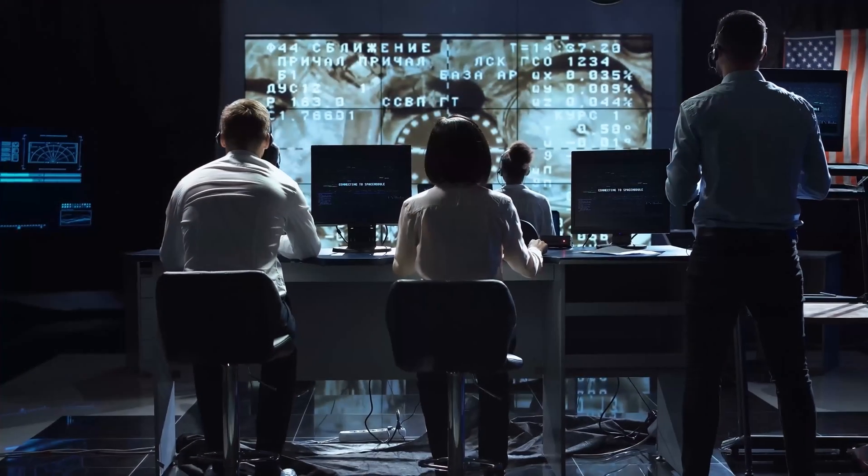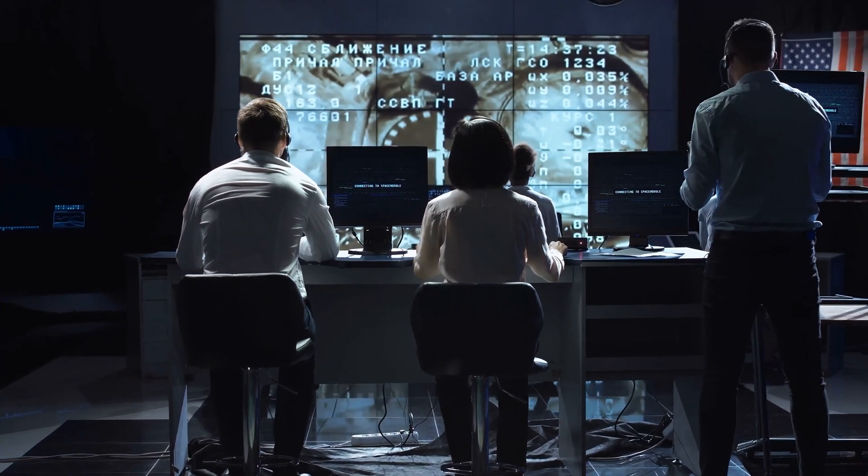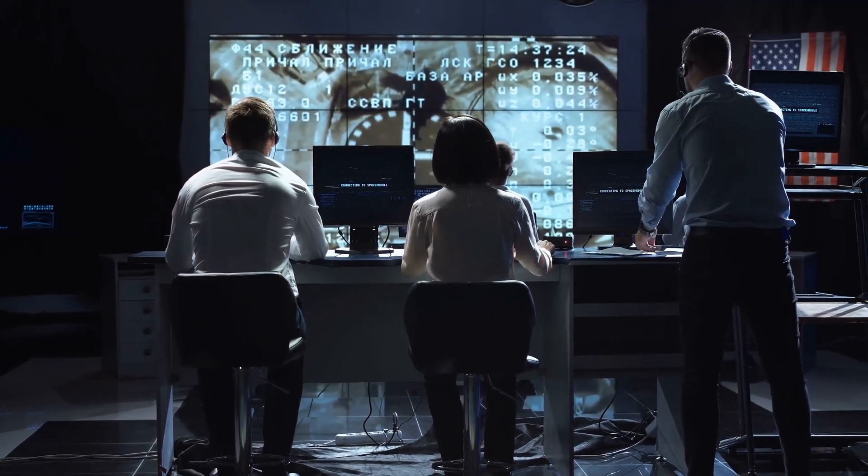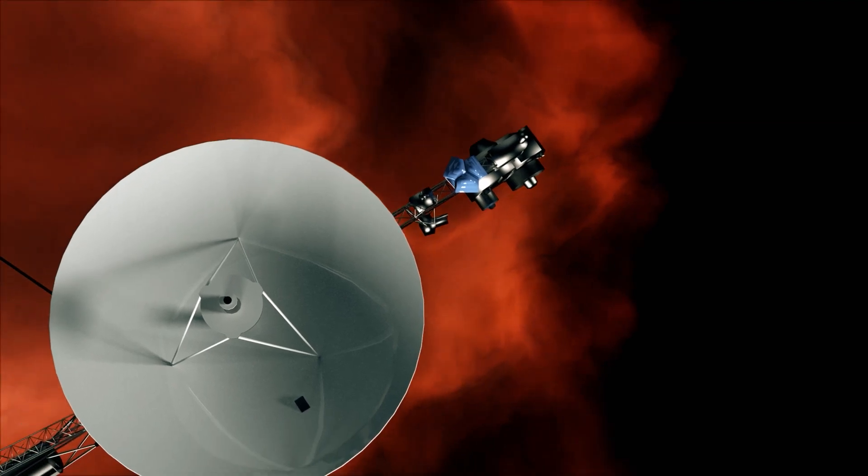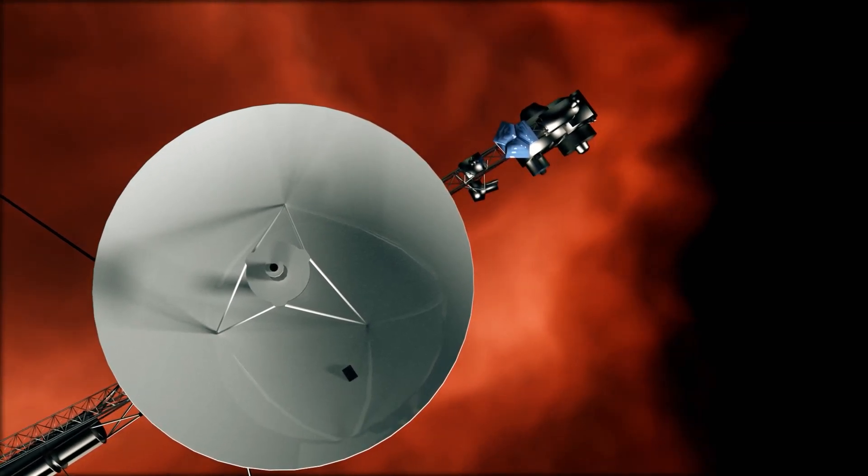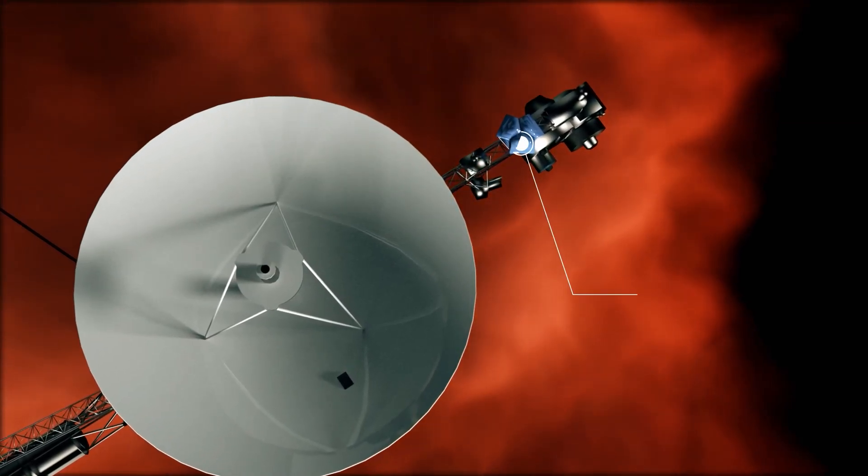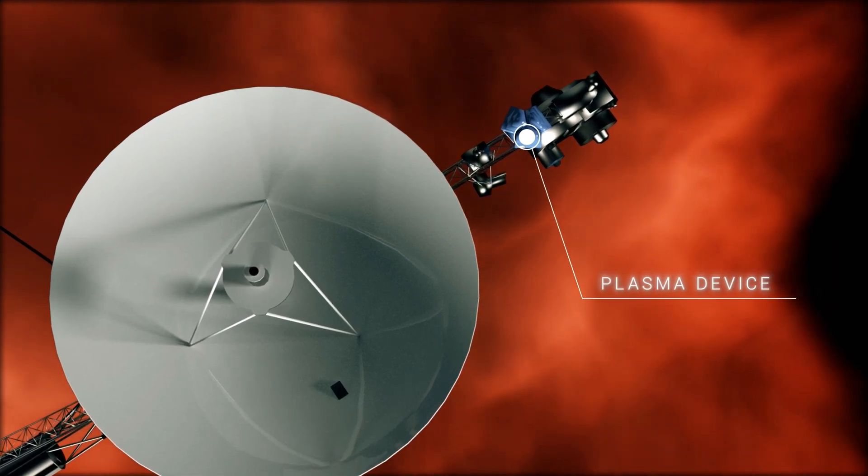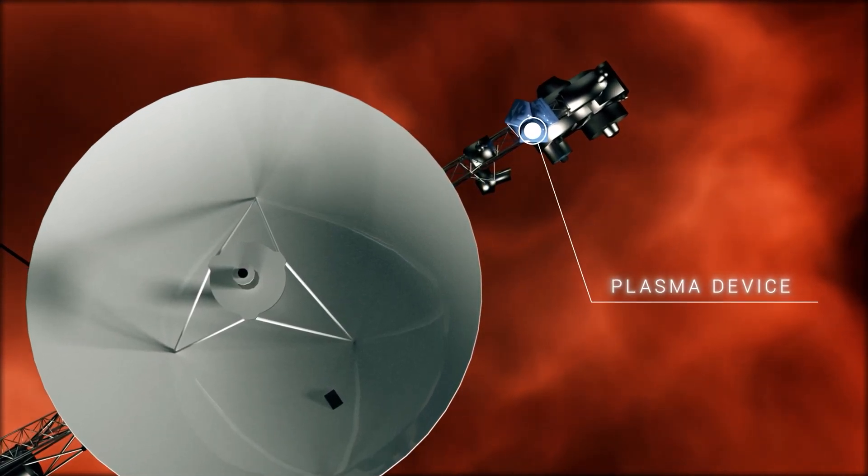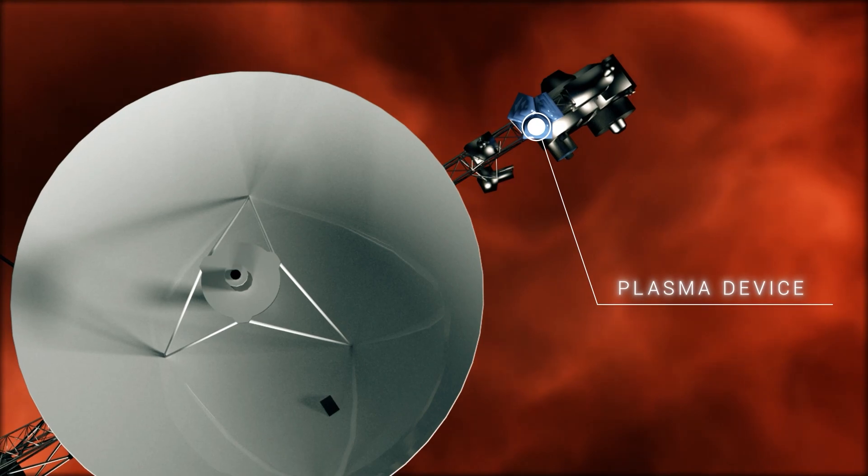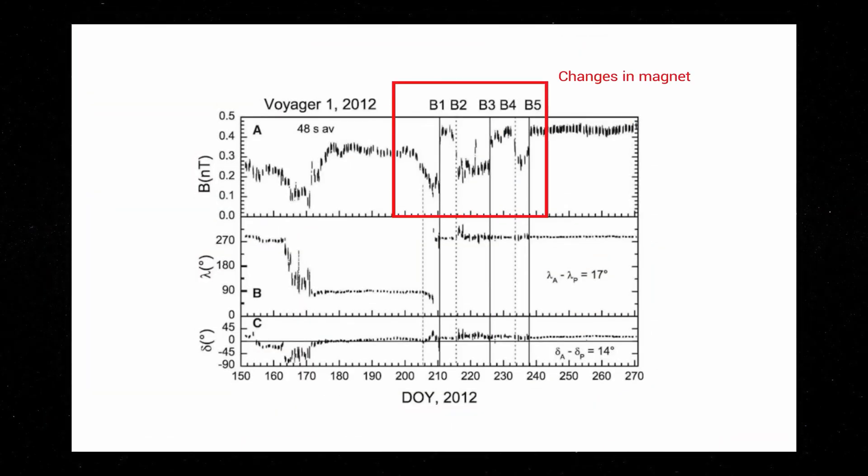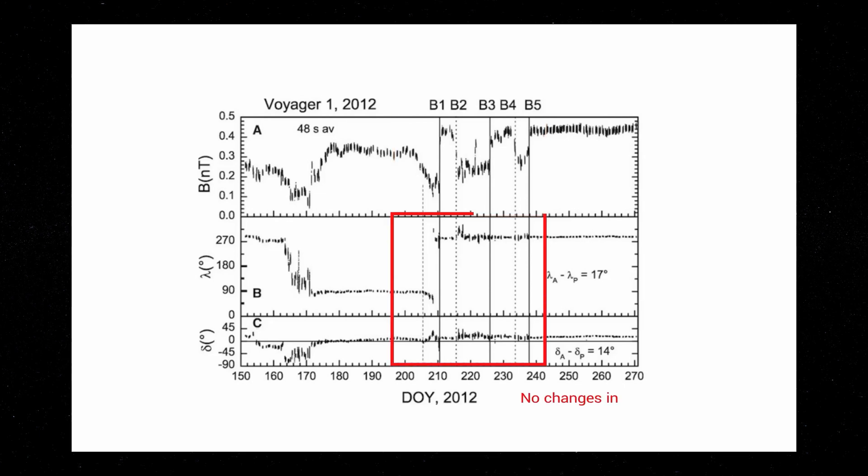However, many researchers were not convinced about these findings and they had their reasons for it. Firstly, the piece of equipment responsible for an extensive analysis of particles emitted by the sun and other stars stopped working on Voyager 1. More precisely, it was a plasma device. Secondly, the scientists did not expect that the magnetic field beyond the constraints of the solar system would be pointed in the other direction, but that didn't happen. We still don't know why.